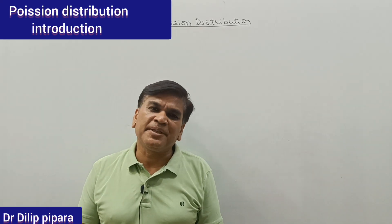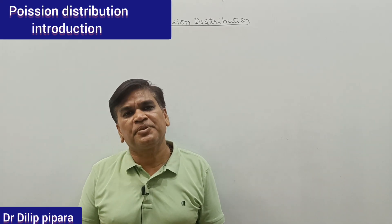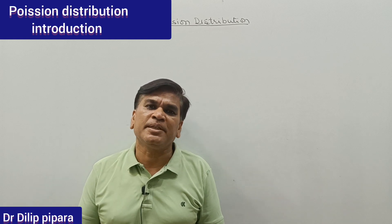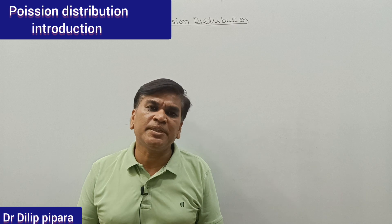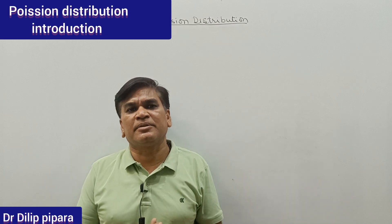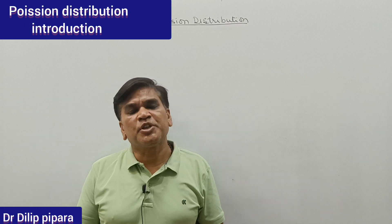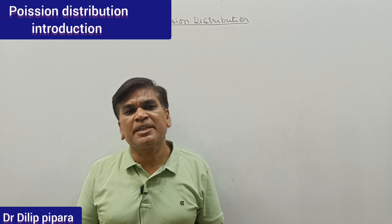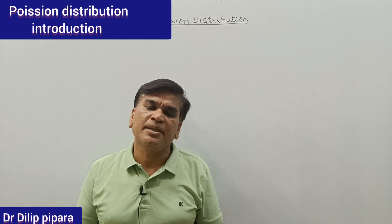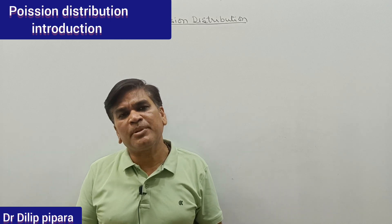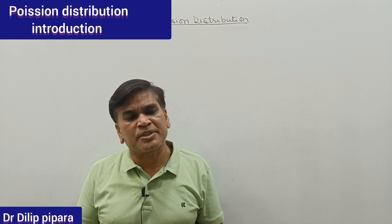In today's video we are going to discuss a new topic of theoretical probability distribution. This topic is very important and is called Poisson distribution, as I have written on the blackboard. This distribution was given in 1837 by Simon-Denis Poisson, and in his name this distribution is called Poisson distribution.